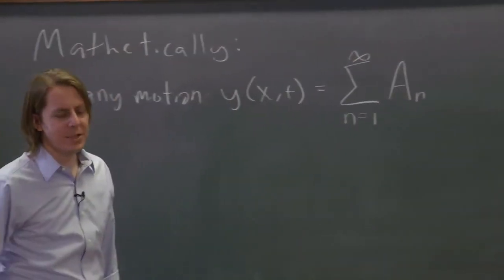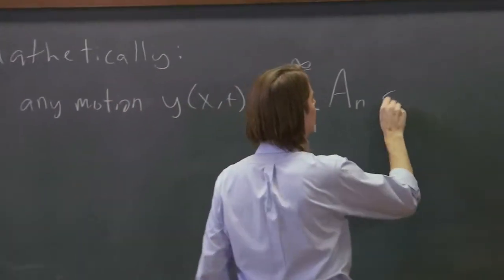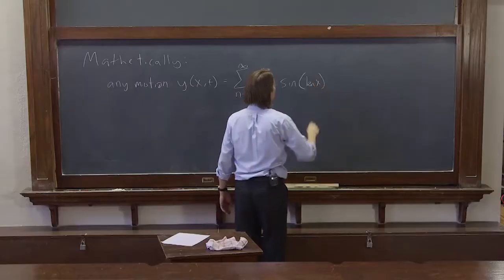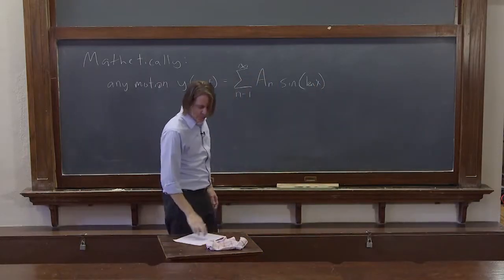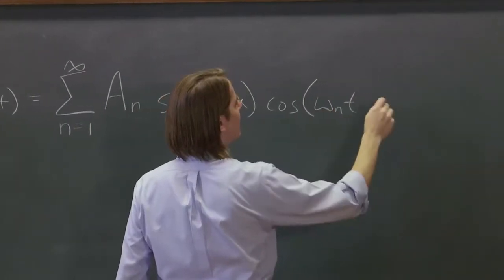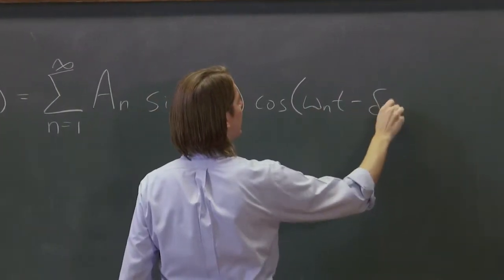We'll give each one an amplitude, and it'll be sine knx times cosine omega nt. And let's actually let them be out of phase, just to make it more general.